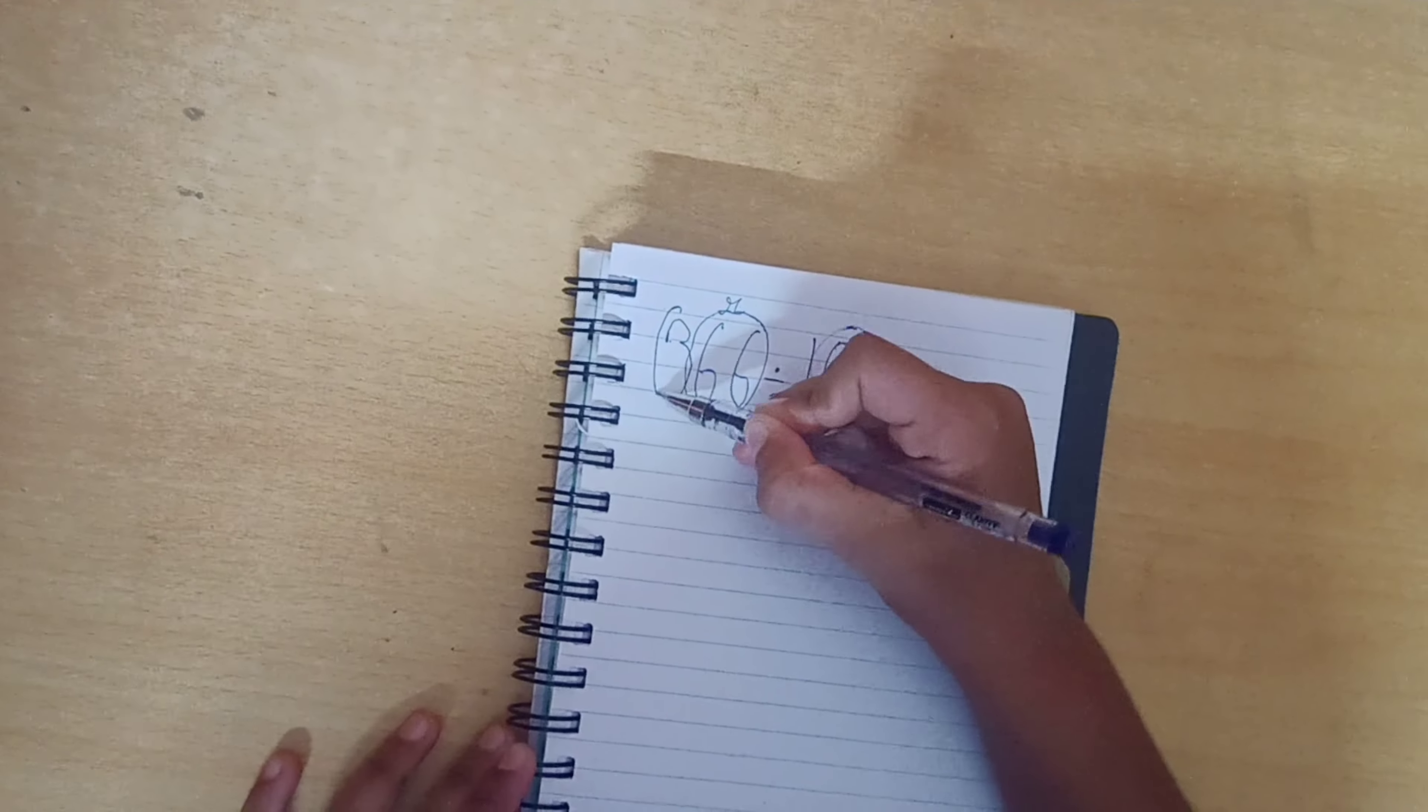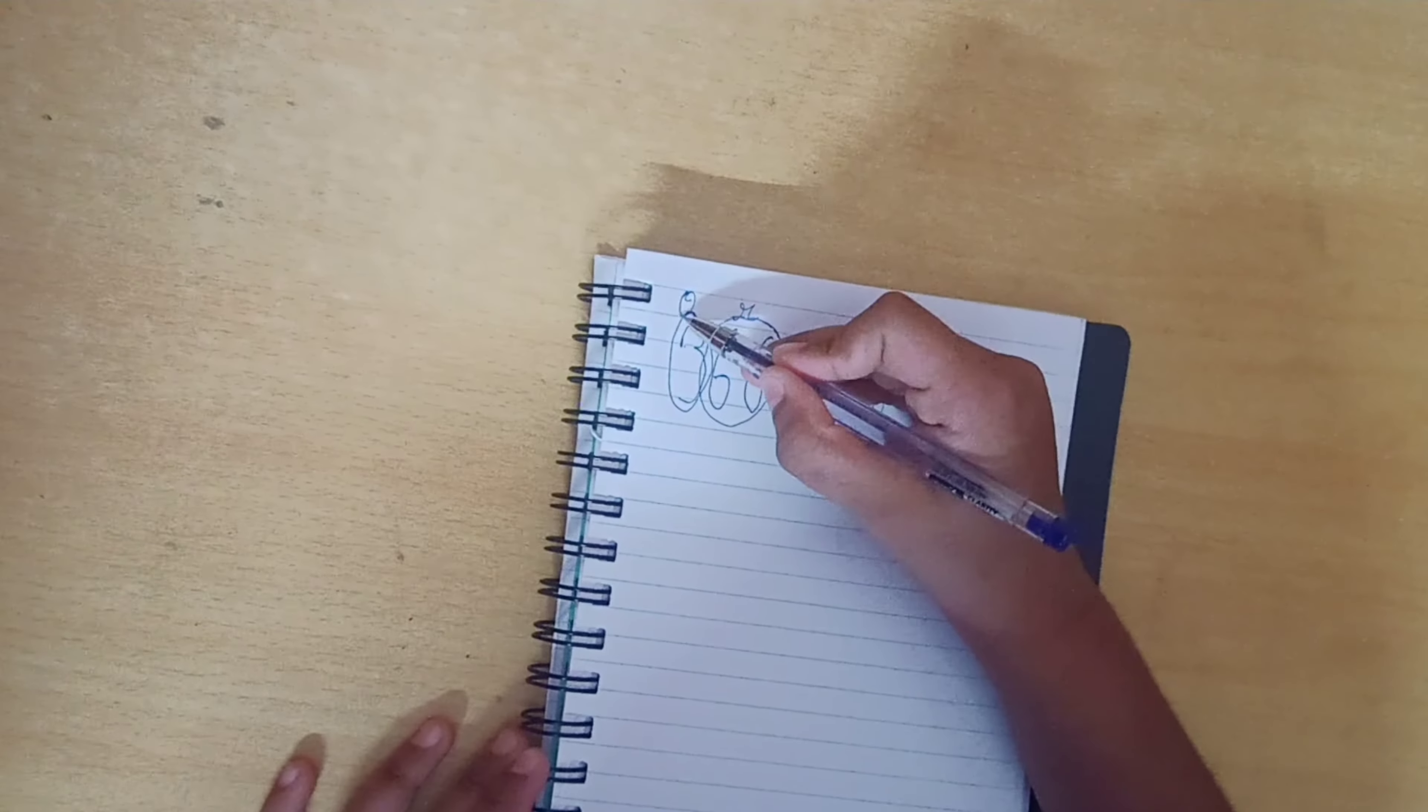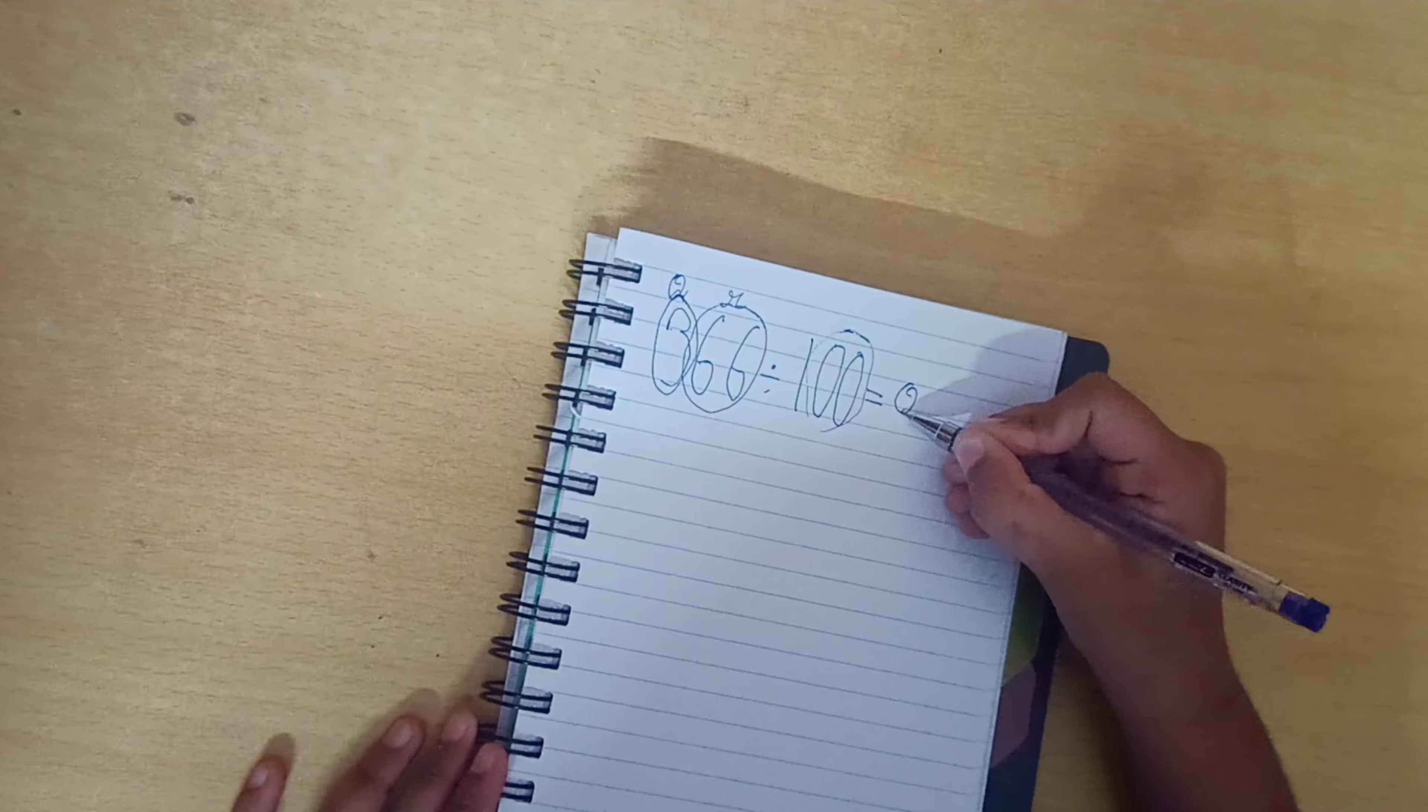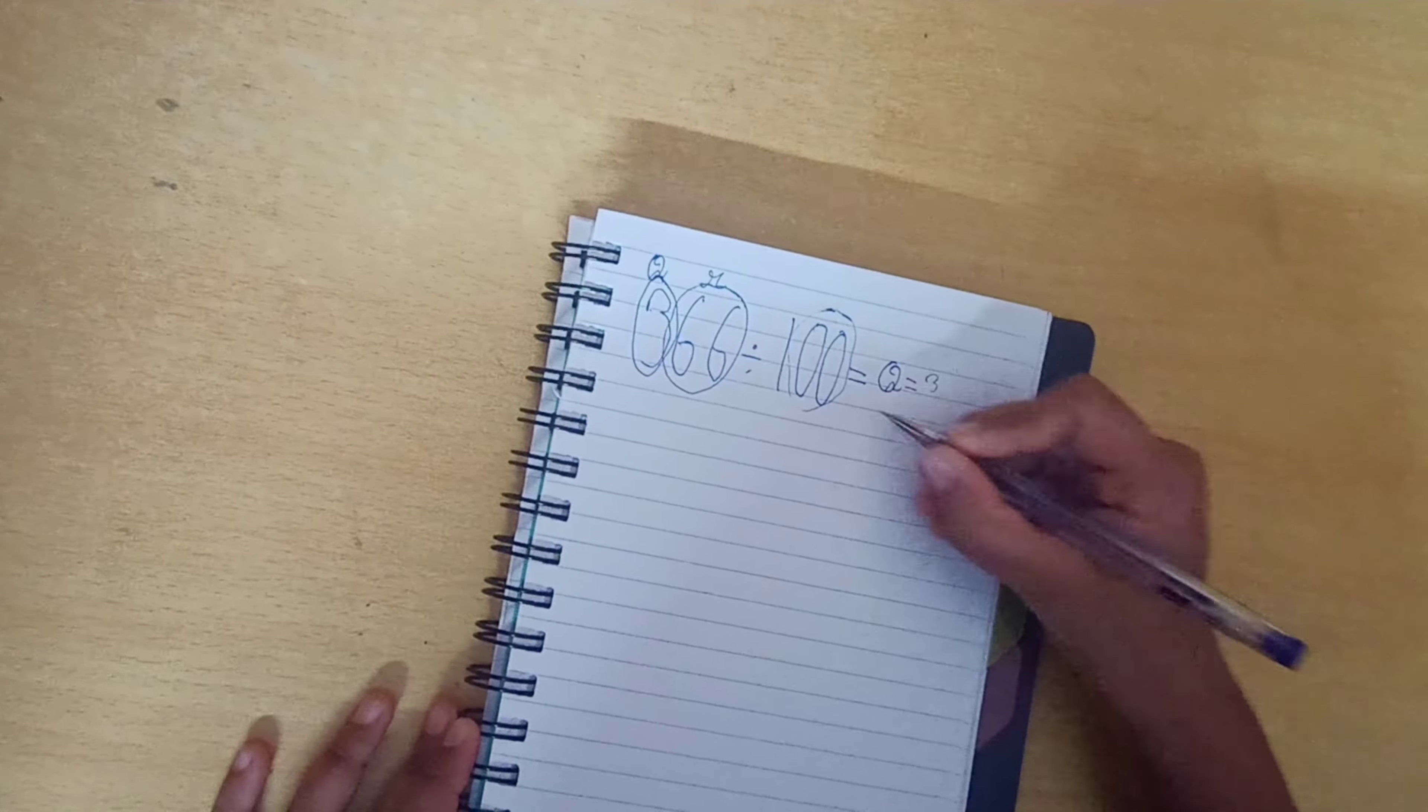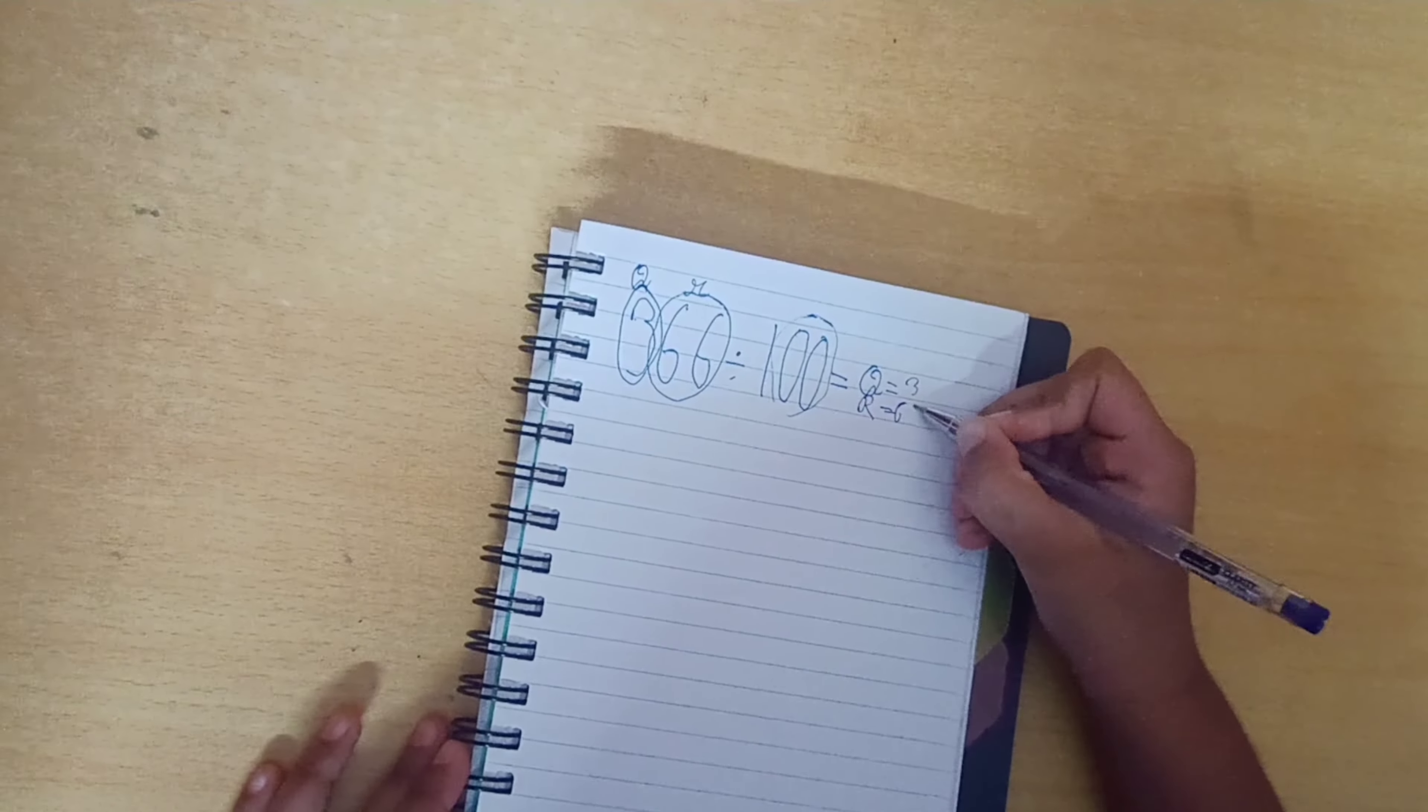And the remaining number will be the quotient. So, the answer is quotient equals to 3, and the remainder is equal to 66.